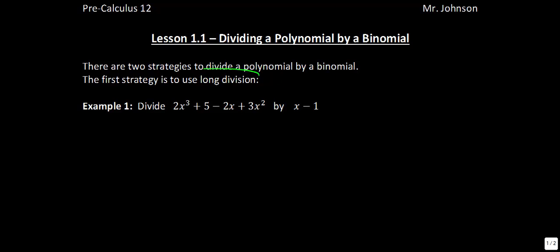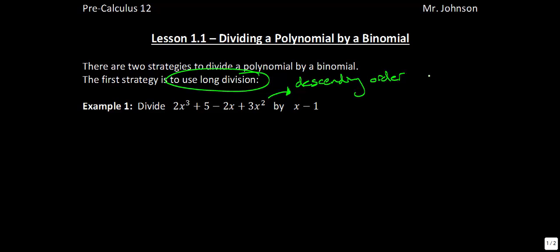The first is going to be using long division. You may recall long division from elementary school. We're going to do this in the exact same fashion. The first thing I want you to note about this first example is that our polynomial written right here is not written in descending order of powers. We have 2x cubed and then we have the 3x squared way down here, where our constant is the second term, where it should be the last term.